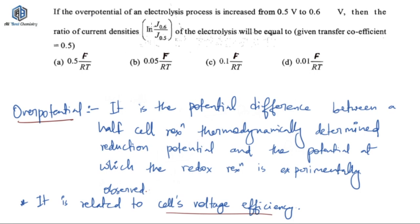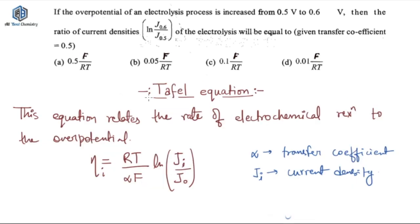Now to solve this question you need a formula or you need an equation basically that equation is called as Tafel equation. So it is called as Tafel equation. So if you are reading this concept first time, I'll just explain this what is Tafel equation and how you will use that to solve this particular equation. So Tafel equation relates the overpotential of the reaction with the current densities. This Tafel equation is the equation which relates the rate of electrochemical reaction to the overpotential.